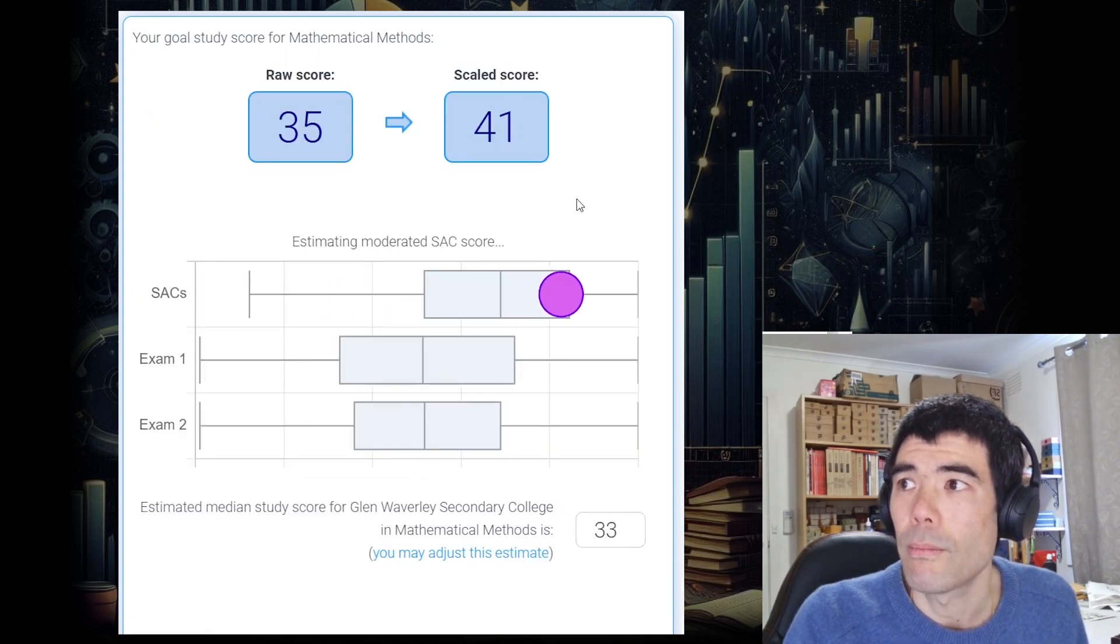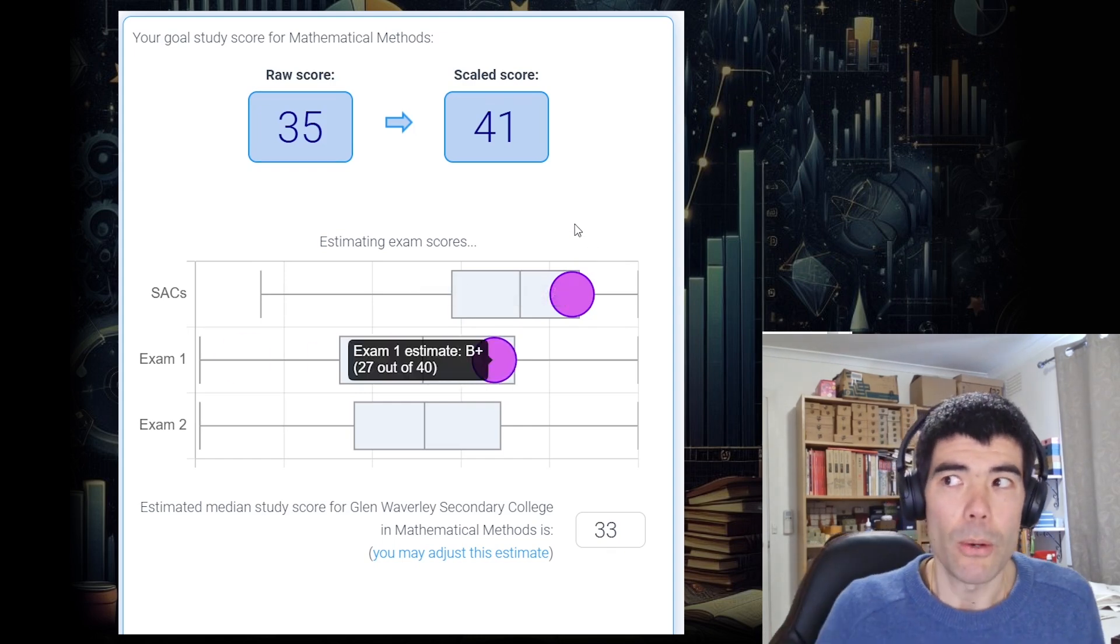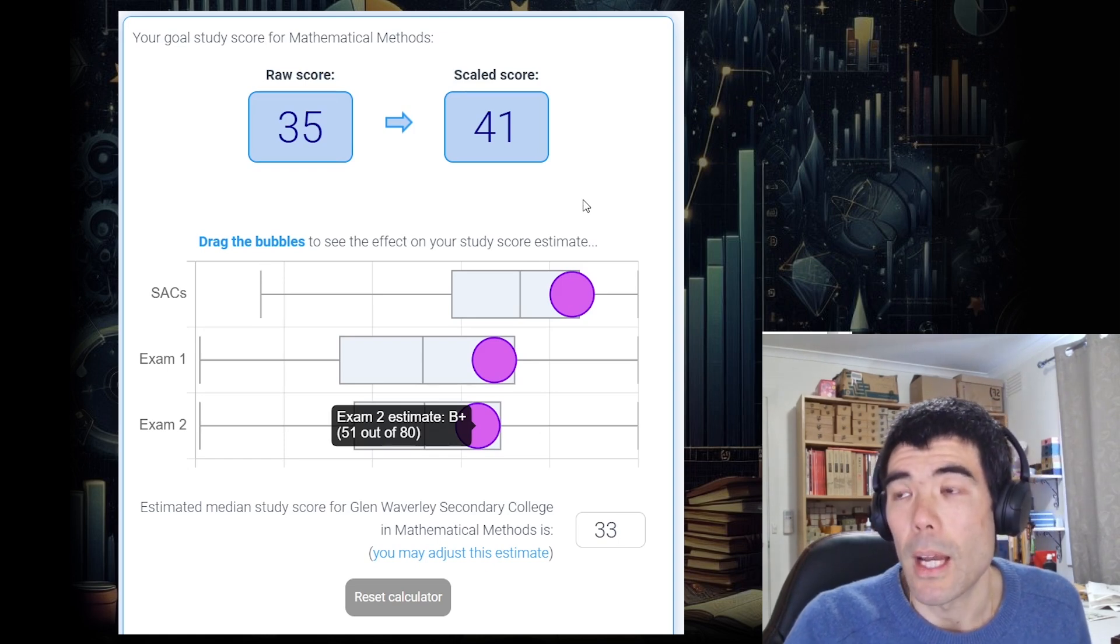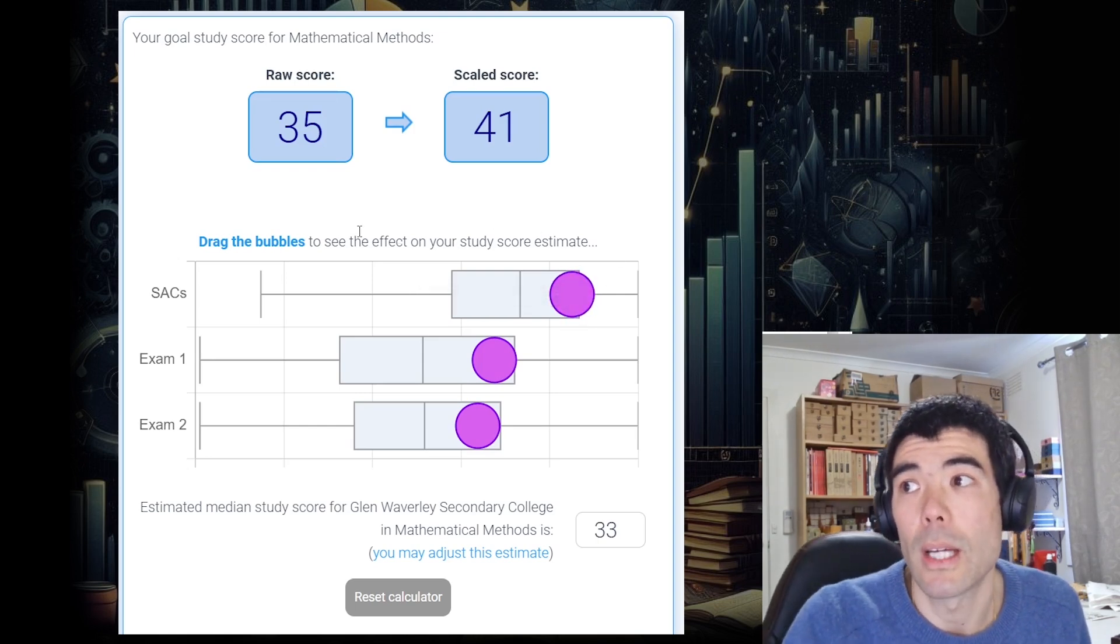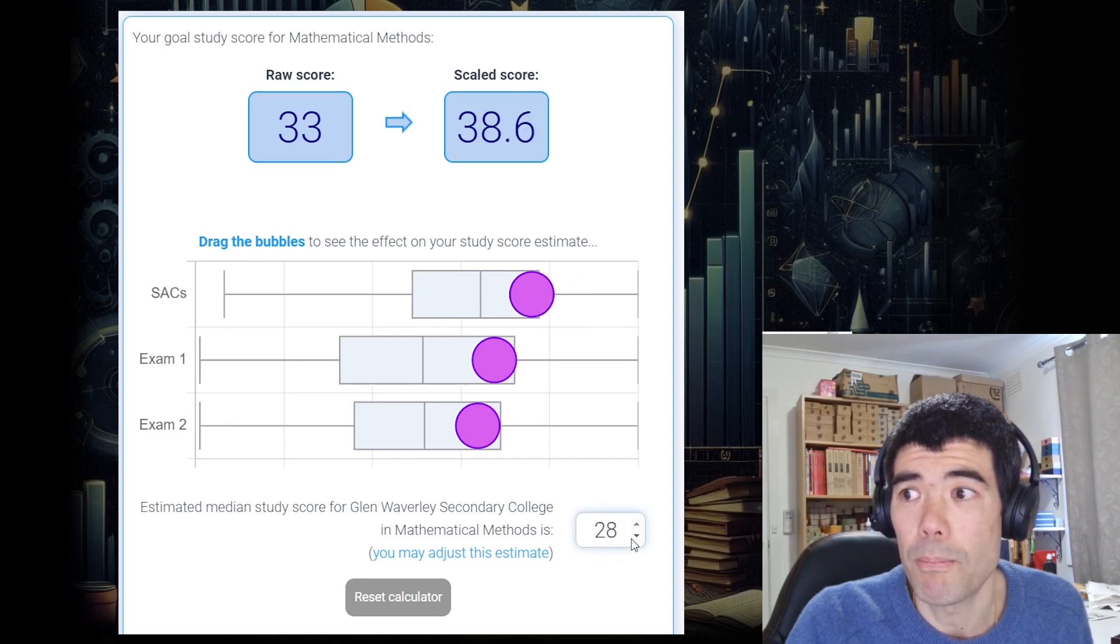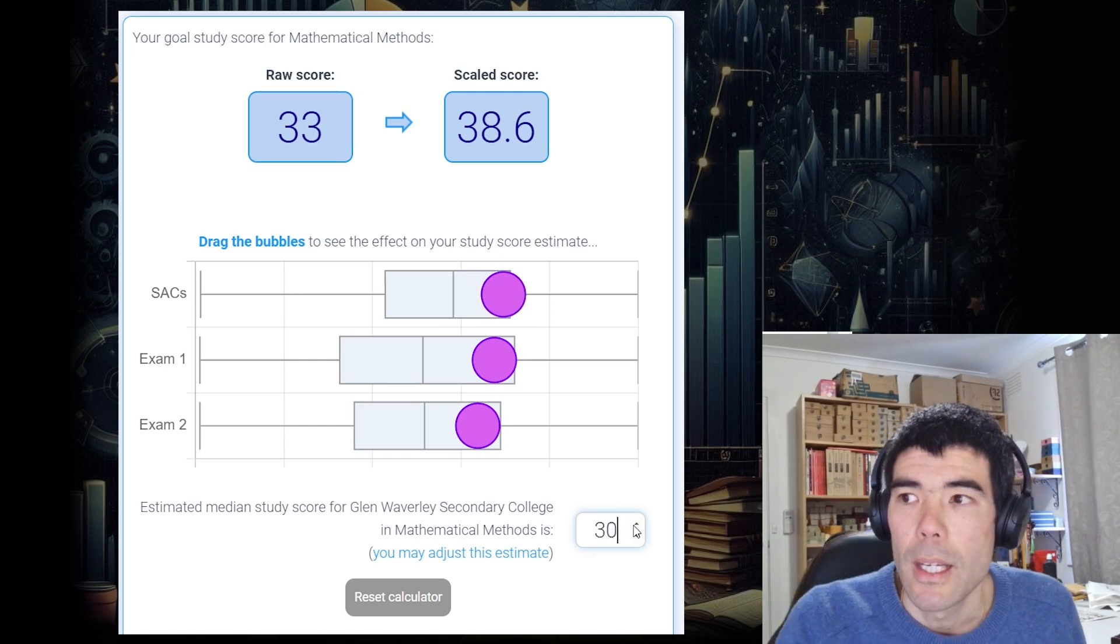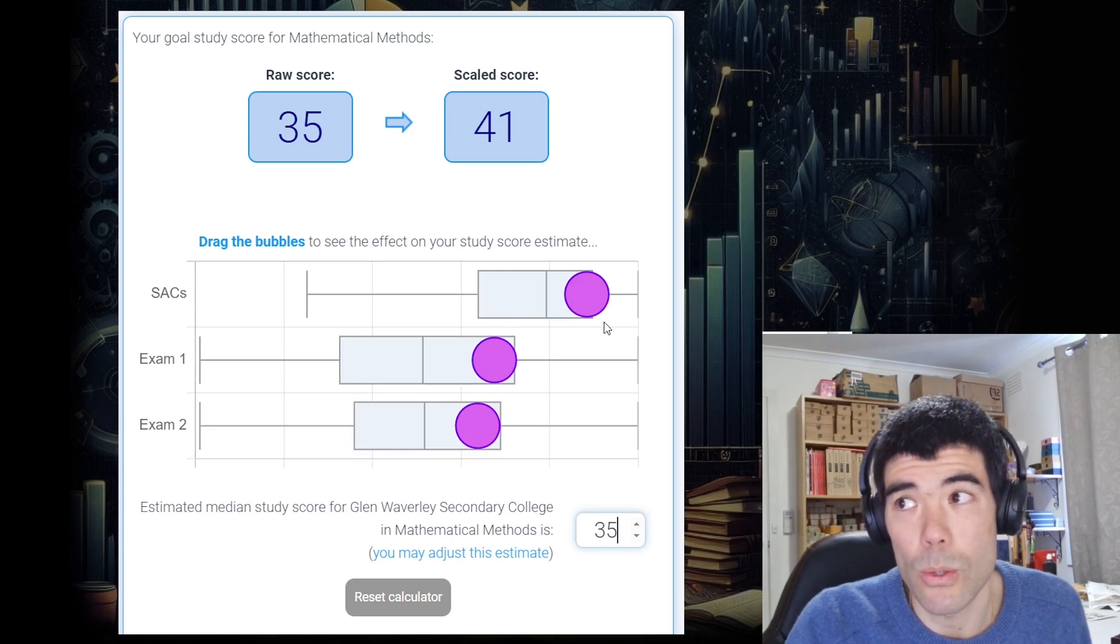And then what will happen is it will show how the SAC scores are moderated and that box plot moves together. So all the students from my school are either moderated up or down based on the exam performance of the students at my school. And my position within those students would stay the same, and I would either move up or down with the whole cohort. So if I'm at a school where the median study score is a bit lower, then what would happen is the SACs would either stay the same or be moderated slightly down. If I'm at a school like Melbourne High or something where the average study score is very high, then the SAC scores will be moderated up.